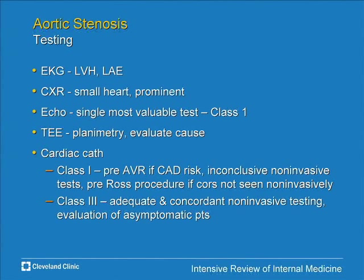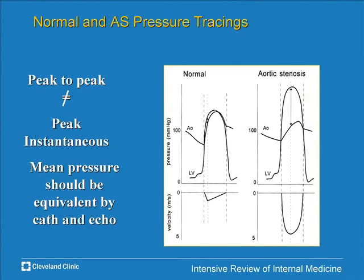The main test for aortic stenosis today is echo, though cardiac catheterization is still used to define coronary anatomy before surgery, or if there's a discrepancy between echo findings and physical examination. When we look at pressure gradients, a normal pressure tracing shows LV and aortic pressure nearly superimposable in systole. In aortic stenosis, LV pressure is higher throughout systole with a late peak — the slow-rising anacrotic carotid response, reflecting the time needed to open the thickened stenotic valve.